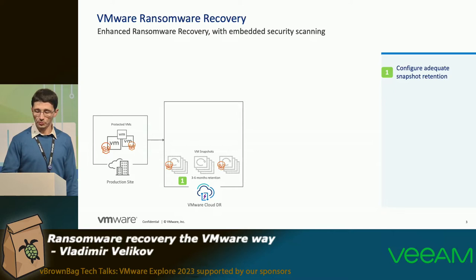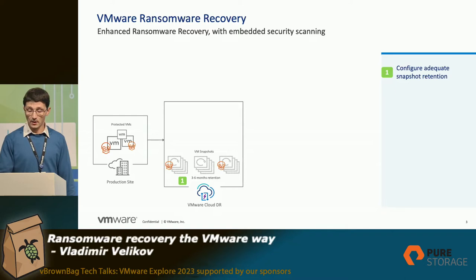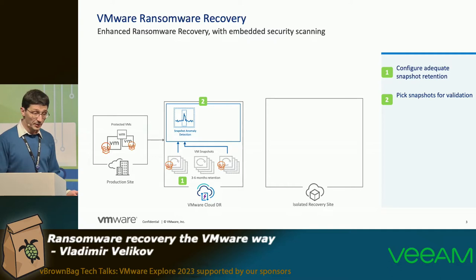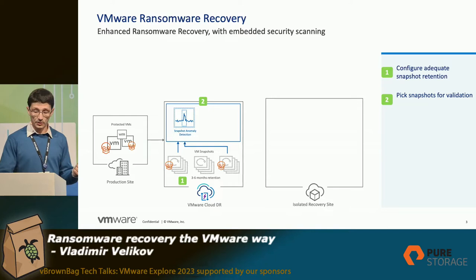Then one morning you wake up and some of the workloads are infected, and also some of the snapshots — big parts of your data are encrypted. The second step is to pick a snapshot to recover from. Normally you would do this by hand.